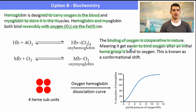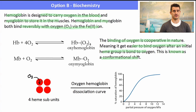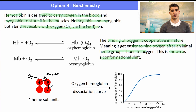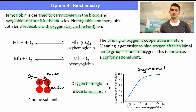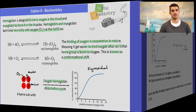Oxygen binding in hemoglobin is cooperative — it becomes easier to bind each successive oxygen the more oxygen is already bound to the heme groups. This is due to a conformational shift: binding the first O₂ makes binding the second easier, and the third easier still. This produces the oxygen-hemoglobin dissociation curve, which has a sigmoidal shape — at very low O₂ concentrations, hemoglobin saturation is low, but as partial pressure increases, saturation rises dramatically and non-linearly.